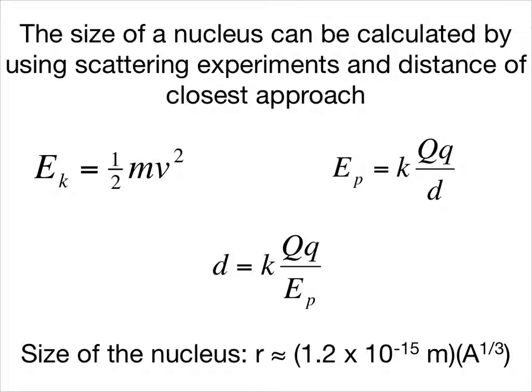When an alpha particle of known kinetic energy comes close to a nucleus, it will slow down, stop, and reverse direction. At the instant that its velocity is zero, all of the alpha particle's original kinetic energy is now temporarily in the form of electric potential energy.